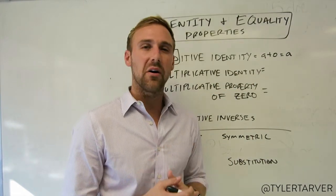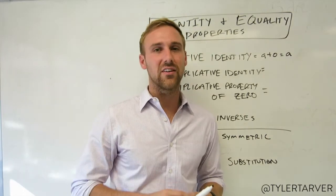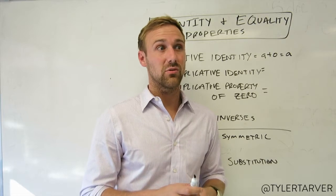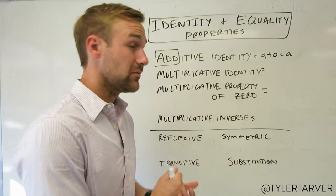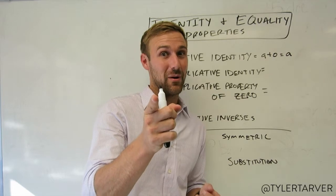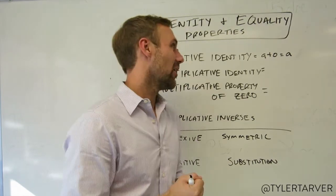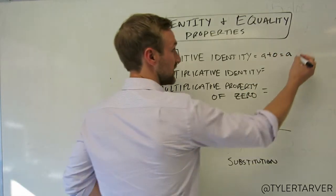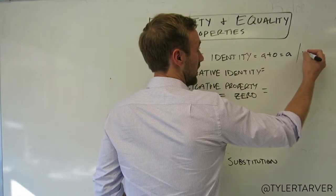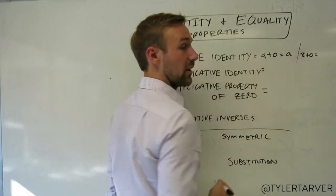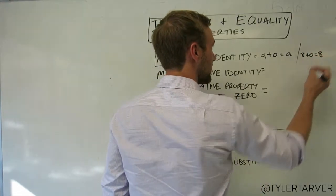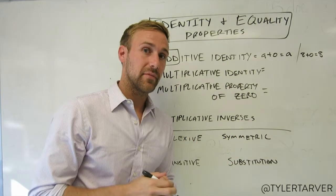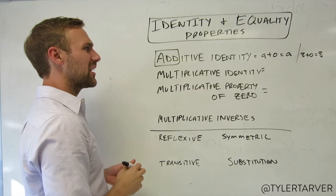Your whole life you're thinking, oh, seven plus zero is seven. Seven dollars plus your zero dollars is seven dollars. So this allows us to confirm this is true. For instance, eight plus zero equals eight. That's the additive identity property.